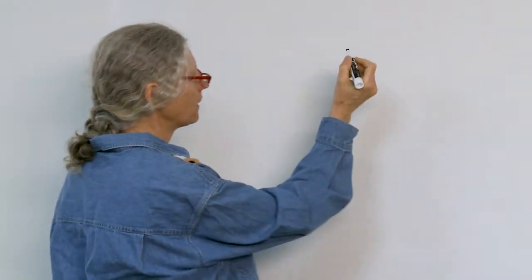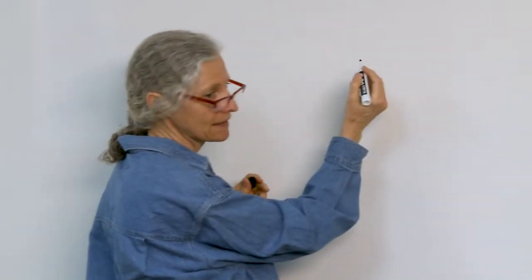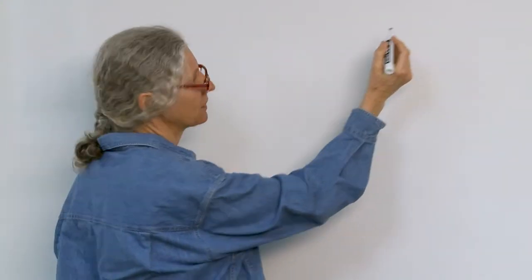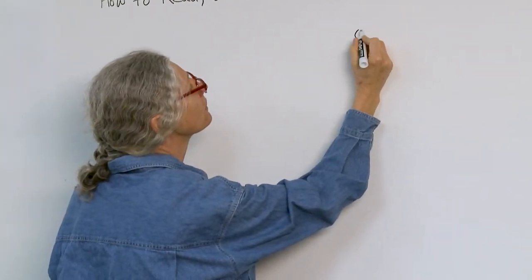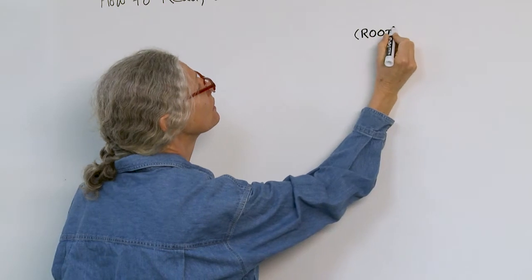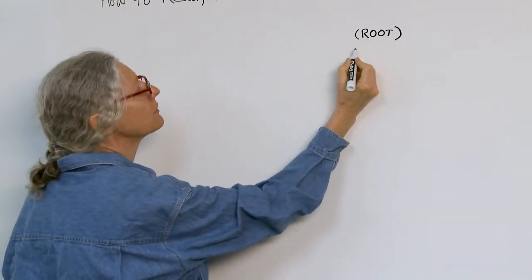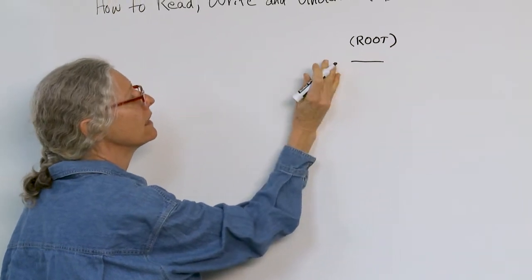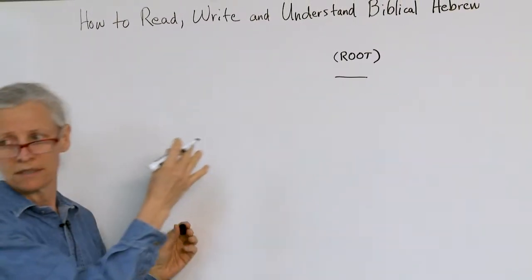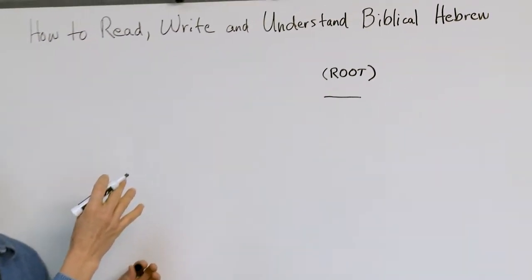All right, so three more suffixes, and I'd like for you guys to write this down. So you've got the root here, the root, which I'm going to write as a dash, okay, and then to the left of the root is the suffix.